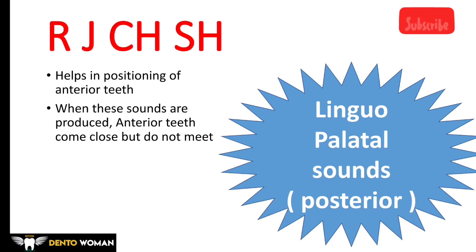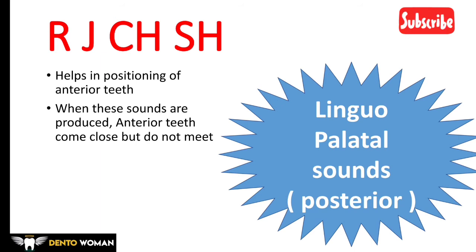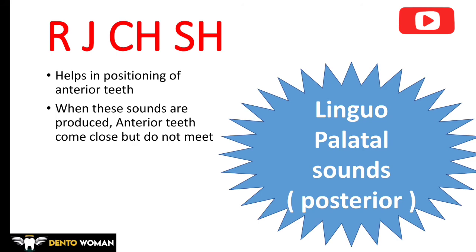Lingua palatal sounds from the posterior palate: when the tongue forms a valve as it contacts the palate, and the release of air helps in producing the sounds. The sounds produced are R, J, CH, SH — like 'ship.' It helps in positioning of anterior teeth; when these sounds are produced, the anterior teeth come close but they do not meet.